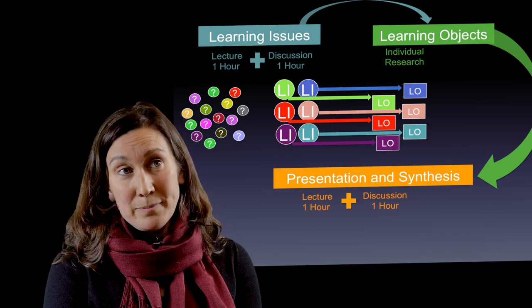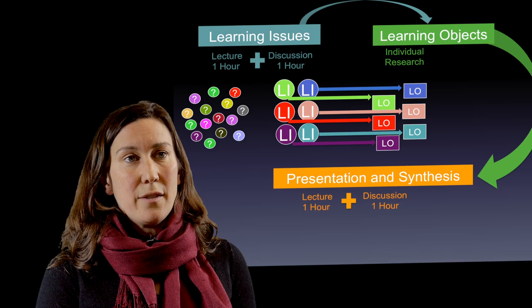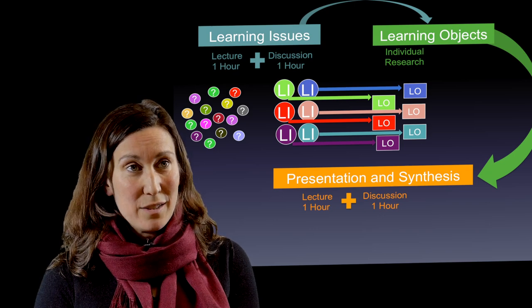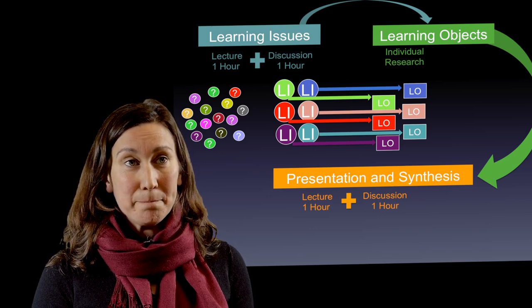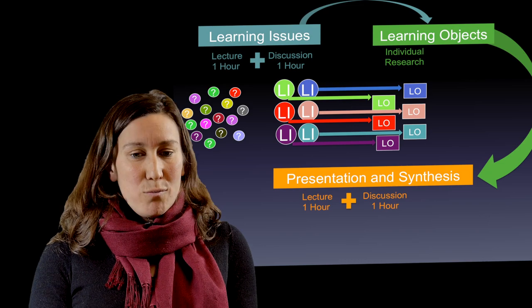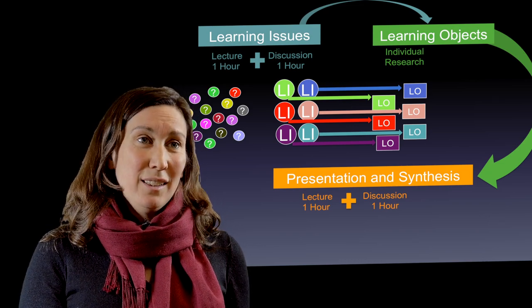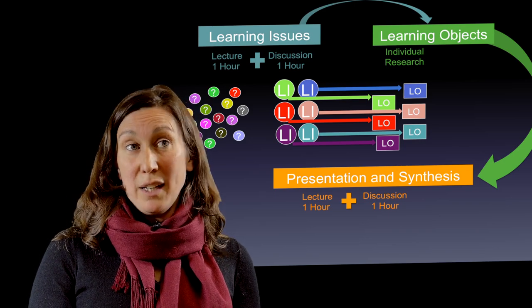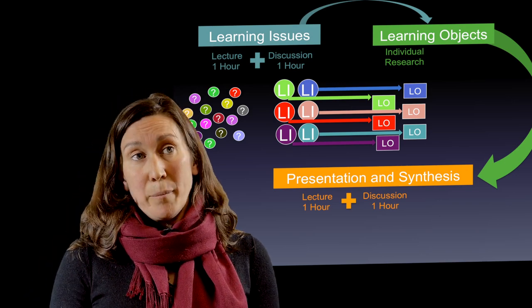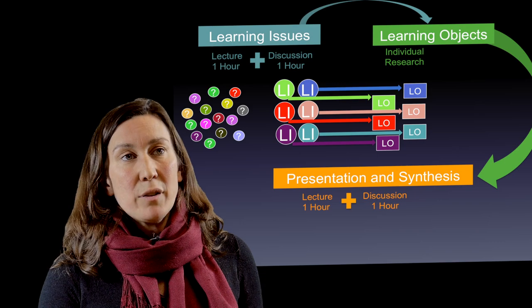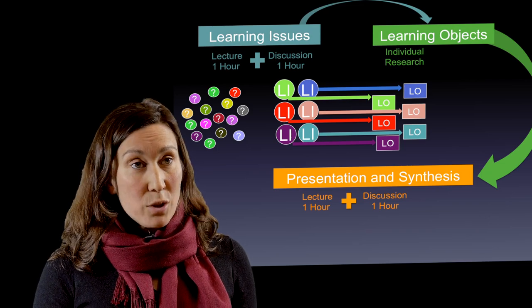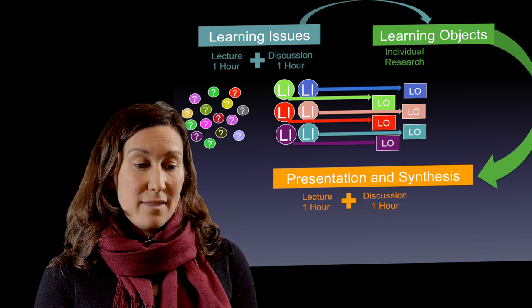So now each individual of the team has a learning issue that is theirs and that they will then take home and independently research. So we've moved into the second process of the case-based learning and that's actually developing your learning objects. Each individual you need to research it and you need to actually track how you got to the information. So we know that this is valid information. You should reference if you actually pull the information from a non-governmental organization's website, if you found it in an academic article from history, from legal studies or from the medical literature. But we really need you to reference it well and actually track how you get to the information. And then you need to write up the learning object and post it to the course website prior to the start of that second lecture hour.